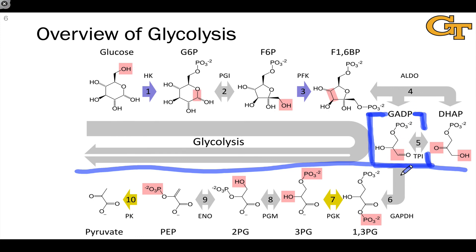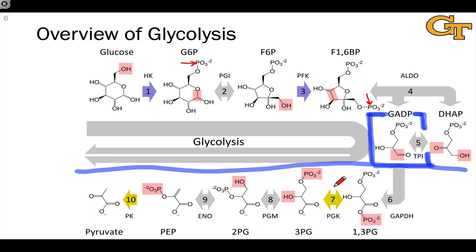From there, GADP is processed by a common set of enzymes to first form 1,3-phosphoglycerate, generating a molecule of ATP in step seven. Additional processing sets up a molecule of PEP, which generates a second molecule of ATP in the final step of glycolysis, yielding pyruvate as the overall product. ATP investments occur in the phosphorylation events in stage one, but the payoff comes in stage two — which happens twice for every molecule of glucose — giving two molecules of ATP from step seven and two from step ten, for a net generation of two molecules of ATP overall.